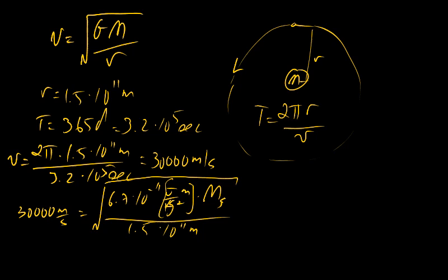That's the R. Squaring both sides and doing the algebra, we get the mass of the Sun at about 2 times 10 to the 30 kilograms.